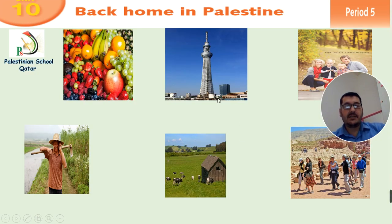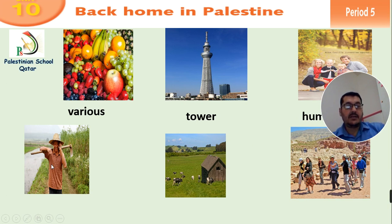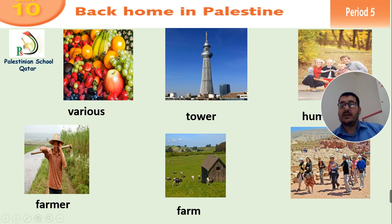Also here we have six pictures. I need you to revise the meaning of each picture according to our last lesson. The first one is various — we have various fruits. The second one: tower, tall building tower. The third one is human being — here we have man, woman, child, children; we call them human beings. And this man who works on a farm is a farmer. And this picture shows a farm. And these people who go to visit places for pleasure, we call them tourists.